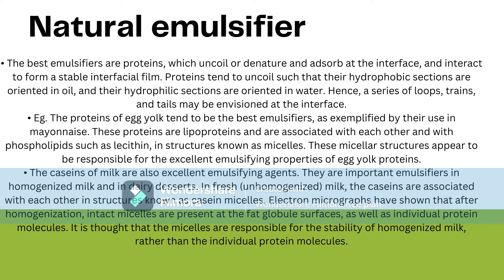The proteins of egg yolk tend to be the best emulsifiers, as exemplified by their use in mayonnaise. These proteins are lipoproteins and are associated with each other and with phospholipids such as lecithin in structures known as micelles. The micelle structure appears to be responsible for the excellent emulsifying properties of egg yolk protein. The caseins of milk are also excellent emulsifying agents and are important emulsifiers in homogenized milk and in dairy desserts. In fresh milk, the caseins are associated with each other in structures known as casein micelles. Electron micrographs have shown that after homogenization, intact micelles are present at the fat globule surface as well as individual protein molecules.